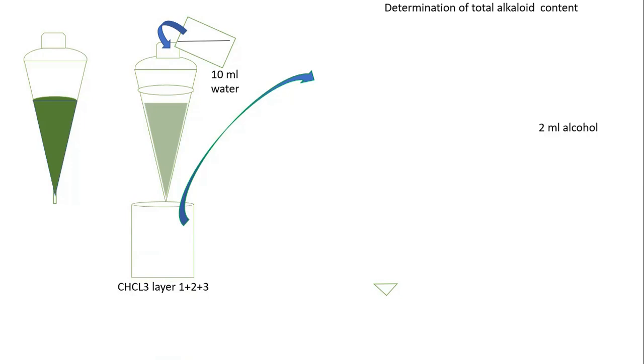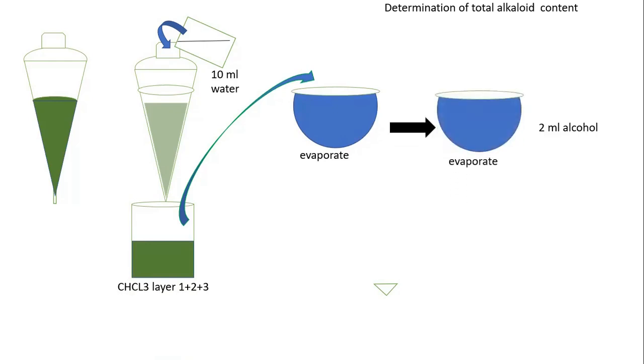Transfer this chloroform layer into an evaporating dish whose weight you have already noted. Then evaporate it. You are getting the residue. To that residue, add 2 ml of alcohol. Again, evaporate that. The alcohol-soluble impurities get dissolved, and as the alcohol evaporates, the alcohol-soluble impurity also gets evaporated.